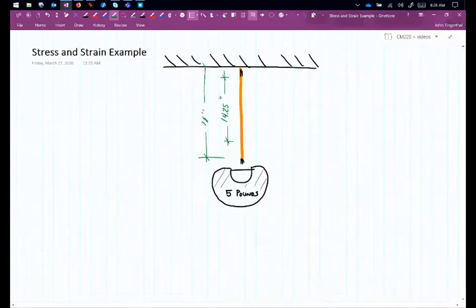So let's first do the stress. The stress in the bungee. Remember that stress F or sigma is equal to force over area. So we know our force. Our force equals five pounds.